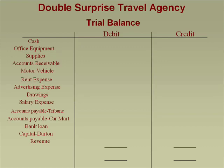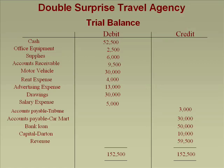The left totals $152,500 and the right totals $152,500 — so you did everything perfectly. From the trial balance, you do an income statement, statement of owner's equity, and balance sheet — we already did that. The most important thing is that the trial balance should balance. We are done with this module. I wanted to show you how to record transactions using T accounts and how to prepare a trial balance. Thank you.